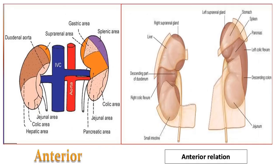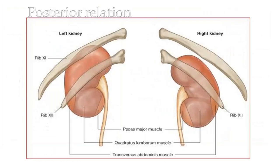As seen in the diagram, from the anterior view of the right and left kidney there are different related structures. On the posterior side of both kidneys there is a presence of the posterior abdominal muscles — the psoas major muscle, quadratus lumborum muscle, and the transverse abdominis muscle.